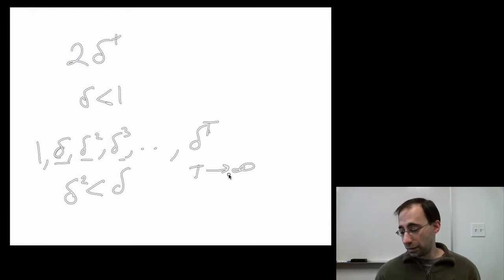As t goes to infinity, and this single arrow means goes to, as opposed to a double arrow which means implies—the single arrow means goes to. As t goes to infinity, this delta to the t gets smaller and smaller and smaller and eventually hits zero. So the limit of this sequence of payoffs is zero, which means that eventually, in the limit, you no longer care about what happened in that period.